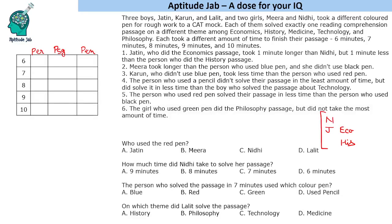Mira took longer than the person who used the blue pen; she didn't use black pen. Karun didn't use blue pen and took less time than the person who used the red pen, so Karun cannot be last. The person who used a pencil didn't solve their passage in the least amount of time. The person who used red pen solved in less time than the person who used black pen, so red comes before black — not necessarily consecutive.